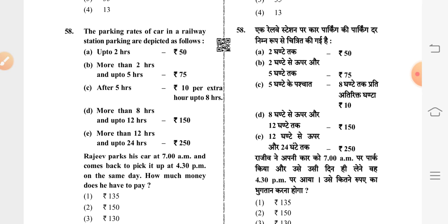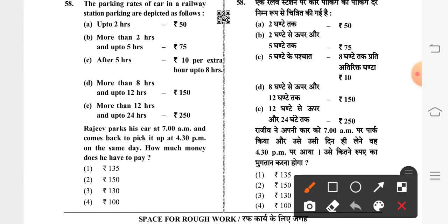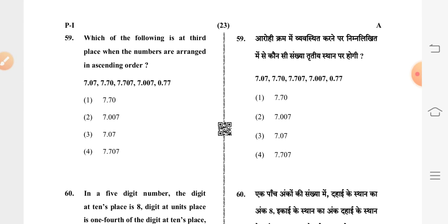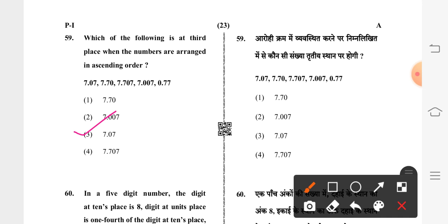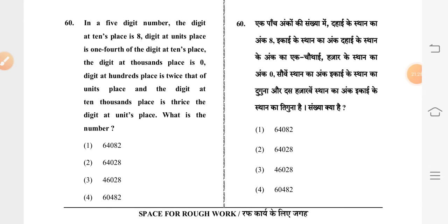Question 58: Raju parks his car at 7 AM and comes back to pick it up at 4:30 PM on the same day. The amount he has to pay is 150 rupees. Question 59: which of the following is at the third place when the numbers are arranged in ascending order? Third option is correct: 7.07.